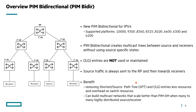Source traffic in a PIM bidirectional setup is always sent to the rendezvous point — this is something really important to understand. It's different to PIM sparse mode; we always send source data to the rendezvous point. The benefit of PIM bidirectional is that by removing the S,G entries, which are shortest path trees, we potentially have less overhead on the switch resource.